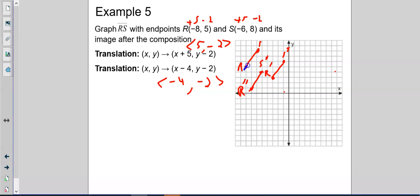But once again, if you see, here's my original line. And I moved 5 to the right, 1, 2, 3, 4, 5, and down 2. 1, 2. And then I moved left 4, 1, 2, 3, 4, and down 2. Same line. Just moved around. That's a composition. When you do more than one thing to it.